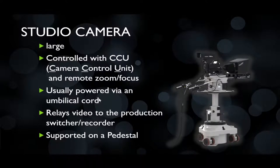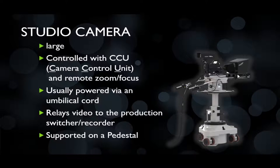The studio camera will also have an umbilical cord, which is a cable that comes out of the camera providing it with power, video, and remote control of the CCU. And unlike the ENG where you record video within the camera, this camera gives you the ability to send video back to another production location. You have the ability to send video to a director's booth or some other means of production.